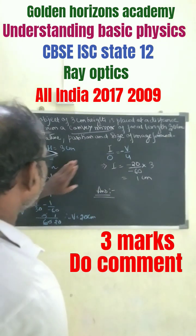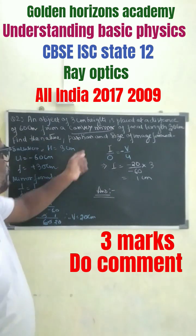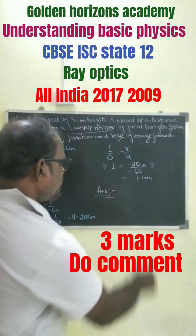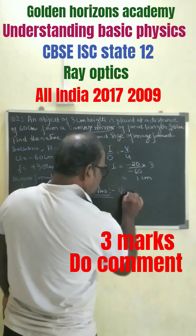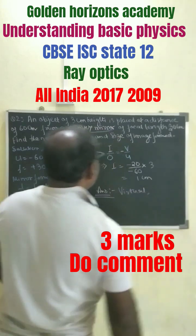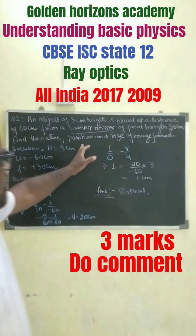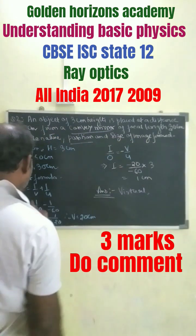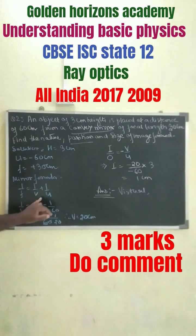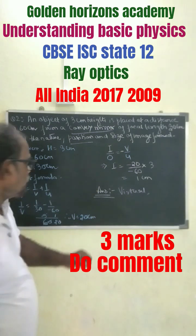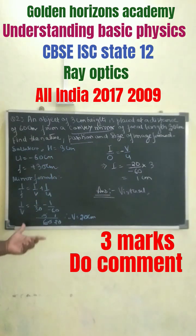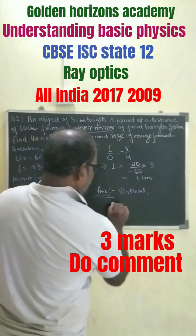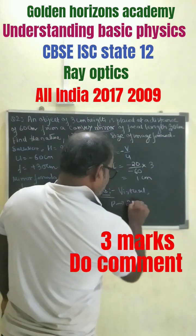We have to find out the nature, position, and size of the image. In a convex mirror, the image is always virtual. To find the position, we use the mirror formula: 1/f = 1/v + 1/u. Putting in the values, we get v equals 20 centimeters, so the image is formed 20 centimeters behind the mirror.